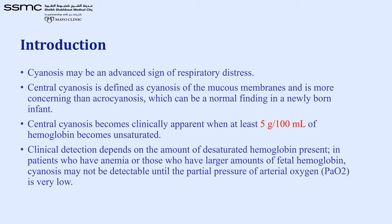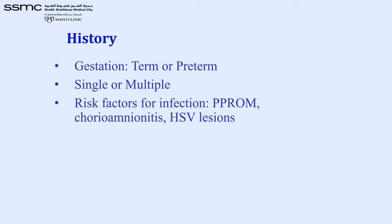We must take all those points into consideration when approaching a newborn with respiratory distress. We start with history, asking about gestational age — whether term or preterm — whether singleton or multiple gestation, risk factors for infection such as PPROM (premature prolonged rupture of membranes), any maternal infection including chorioamnionitis, herpes simplex virus lesions, and so on.